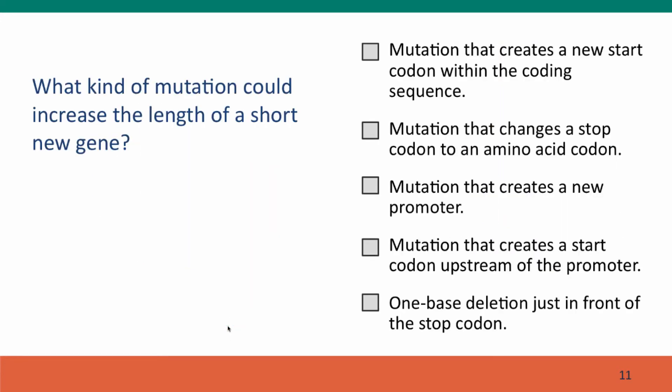Here's the question: most likely when such a new gene originates by chance, it's going to be pretty short. The protein it makes is not going to be long enough to fold up into a complex catalytic enzyme — it'll have to start out by doing something quite simple. But if that something is beneficial, then selection would favour mutations that increased the length of the gene in ways that made it more functional.